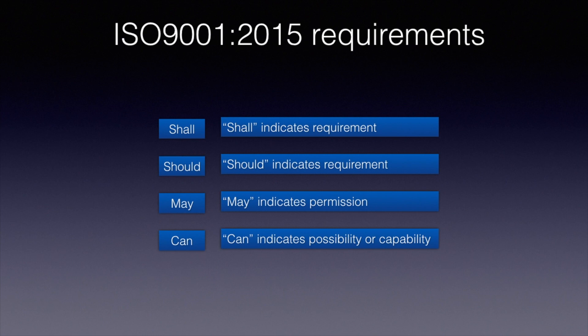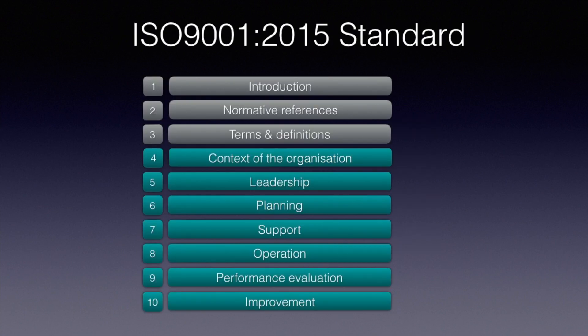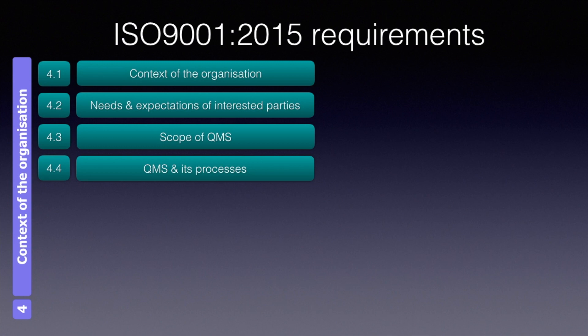There are 10 clauses in ISO 9001:2015. The first, second, and third clauses are for introduction only and are non-auditable — they specify no requirements. The fourth clause is 'Context of the Organization.' Context means the background or environment under which the organization operates. It covers: internal and external issues (clause 4.1), needs and expectations of interested parties (clause 4.2), scope of the QMS (clause 4.3), and the QMS and its processes (clause 4.4).